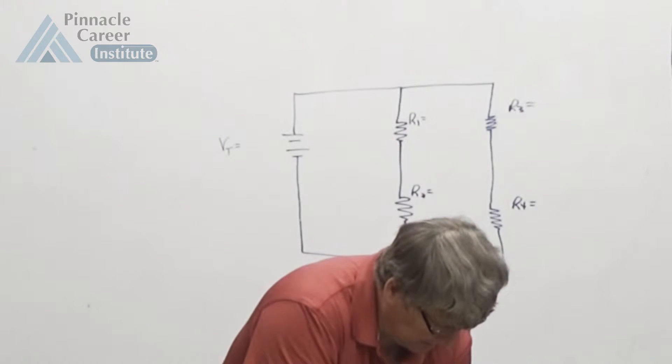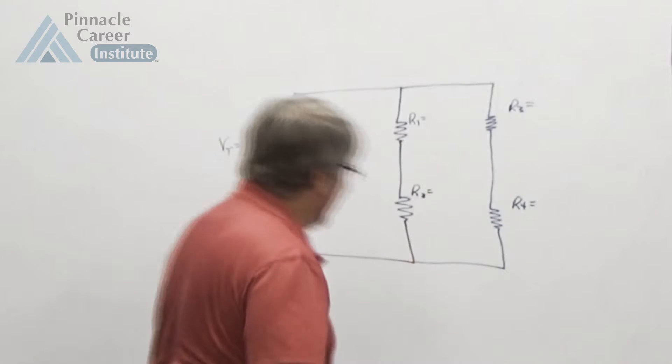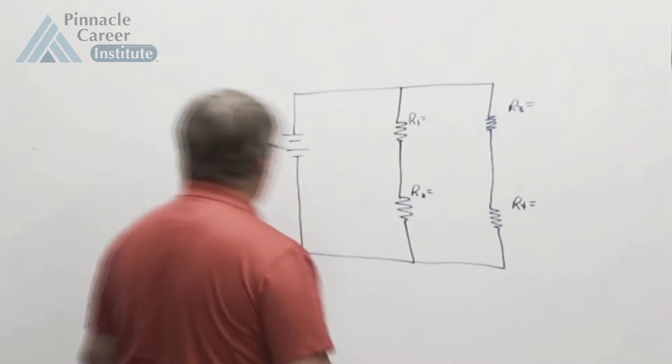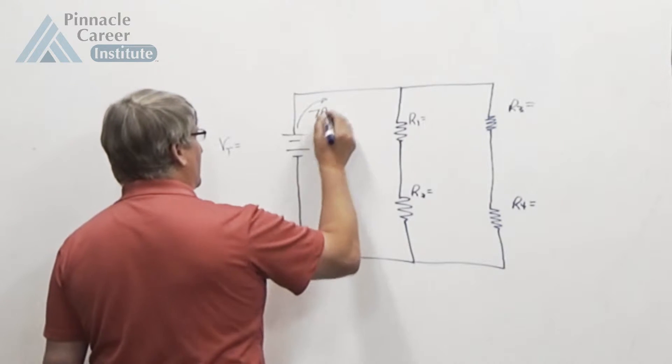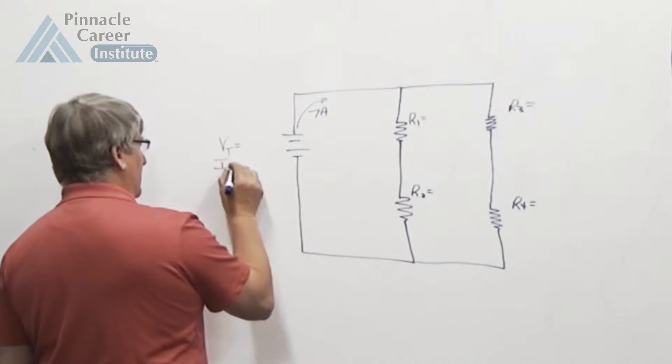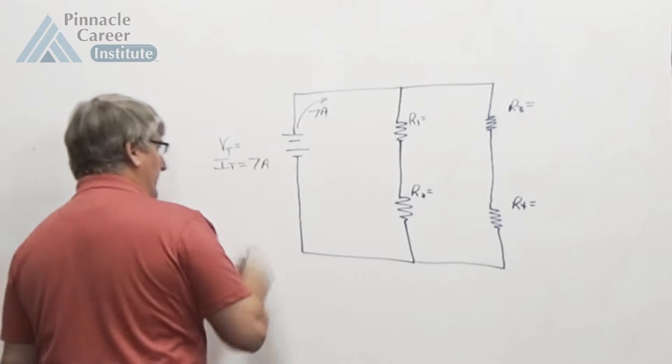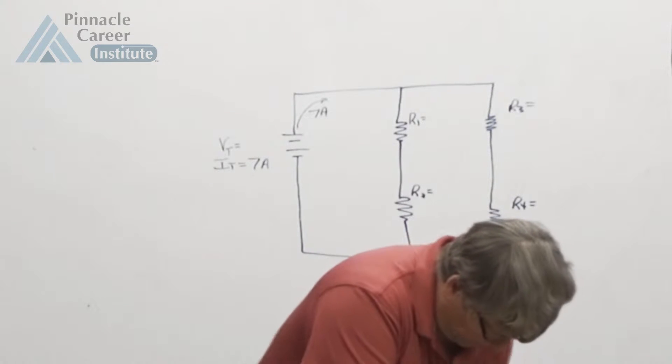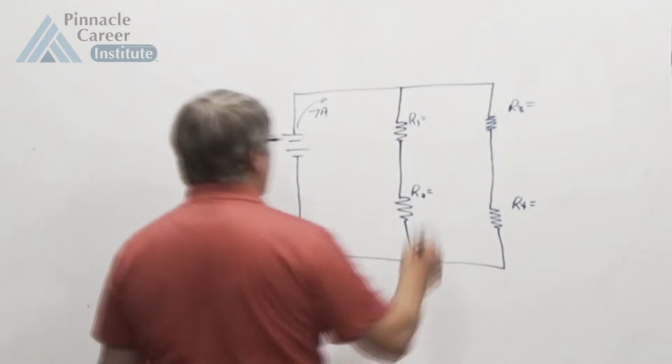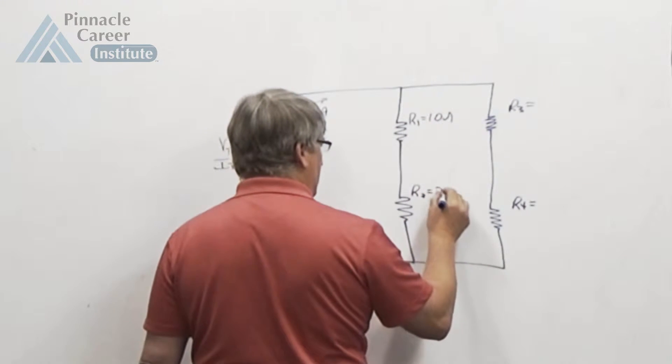And what they gave us, they did not give us VA. They did give us I total, and I total is 7 amps. So I get 7 amps of current. I total equals 7 amps. They gave us 10 ohms and 20 ohms on R1 and R2.